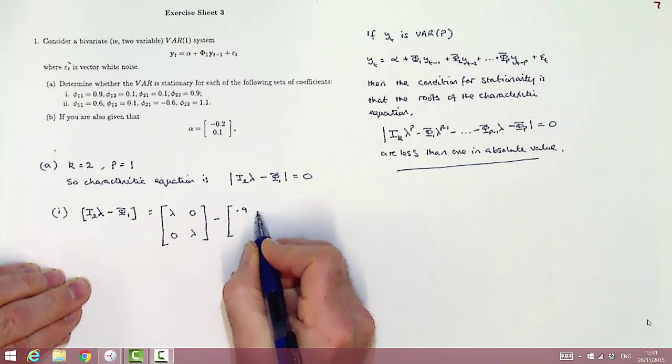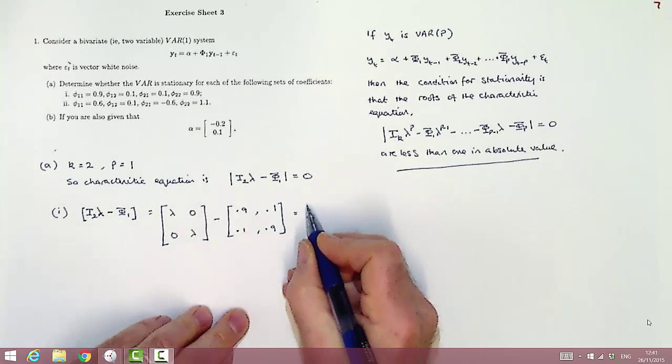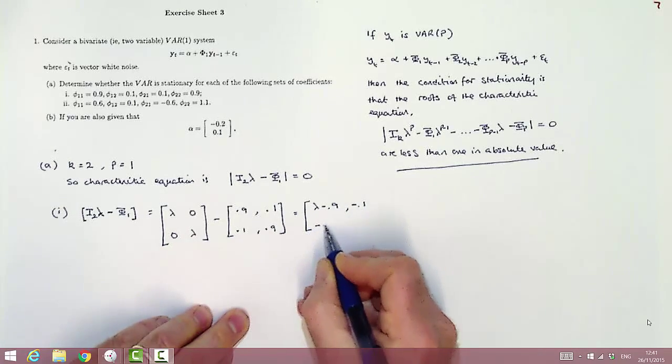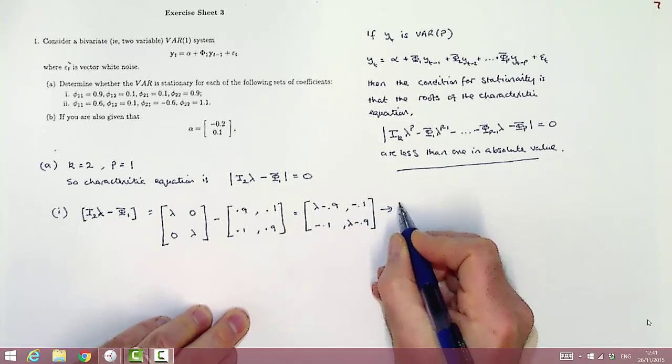So I2 times lambda is just a diagonal matrix with lambdas down the diagonal, putting in the value for phi given in the question, and then subtracting the phi from lambda I2, we get the following expression.